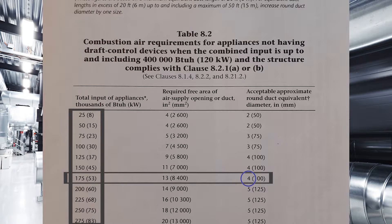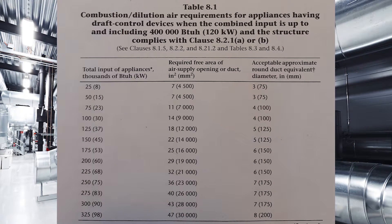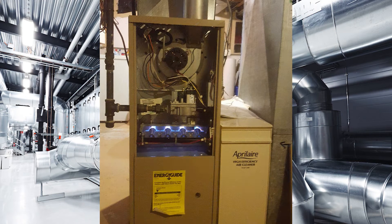We can see a difference between the last two examples. Table 8-1 gives us a larger air supply because it's also accounting for dilution air. But appliances without draft control devices don't use dilution air, so the fan-assisted appliances will have a slightly smaller air supply.